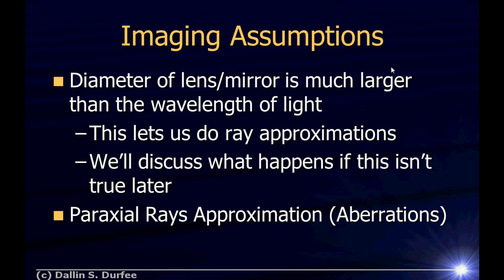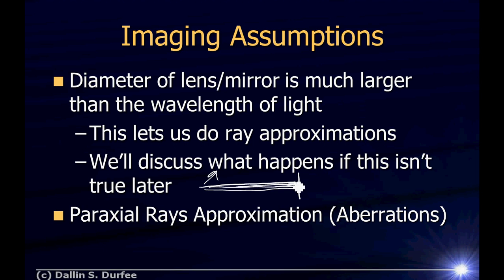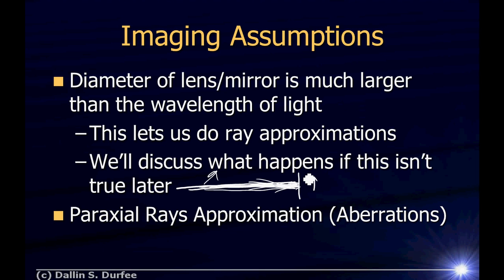We're also going to make the paraxial rays approximation. That means we're not going to consider rays of light that go off at weird angles. If here is our mirror, we're only going to consider rays of light that stay kind of close to the middle of our mirror — close to the optical axis, which is a symmetry axis of our mirror. When we draw figures, we'll greatly exaggerate this dimension, so it'll look like we're not doing the paraxial ray approximation, but we are.